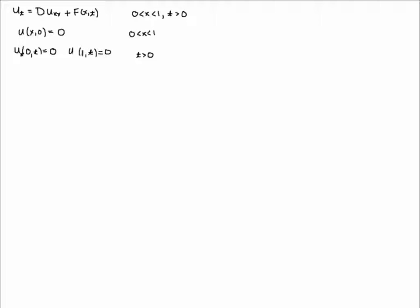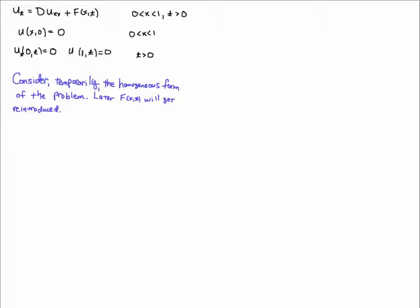The first thing we're going to do is consider the homogeneous form of the problem first, and then we'll introduce f(x,t) later. We can do that because we're just going to consider the spatial part of the equation — the f(x,t) will get absorbed into an integral involving the basis functions. The fancy way of saying that is we're going to project f into the space of basis functions. If we consider only the homogeneous form, we have this PDE here where we don't have the f anymore.